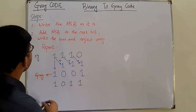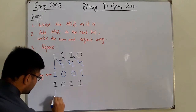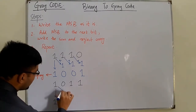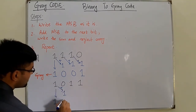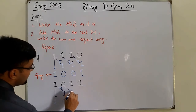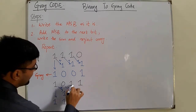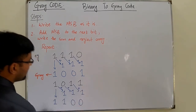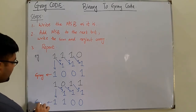Another example: binary 10111. Write MSB (1) as it is. Add to next bit: 0+1 = 1. Bring that 1, add to next: 1+1 = sum 0. Bring that 0, add to next: 1+1 = sum 0. The gray code for 10111 is 1100.